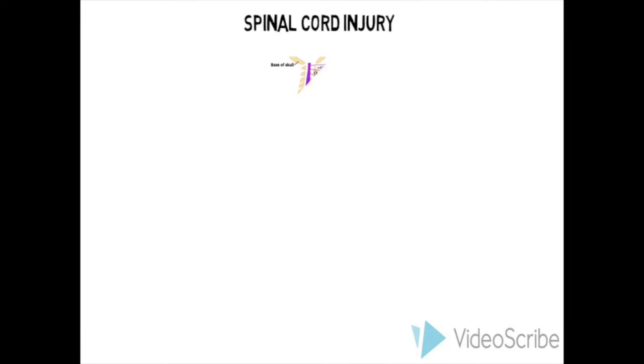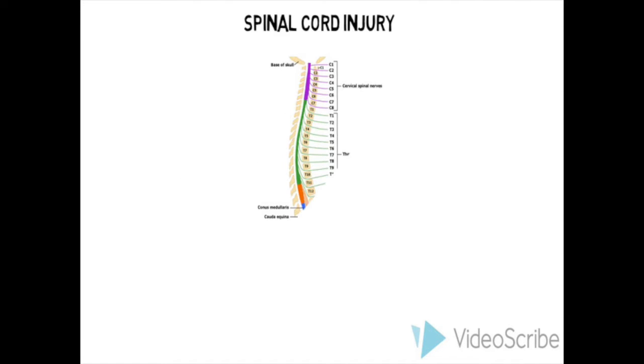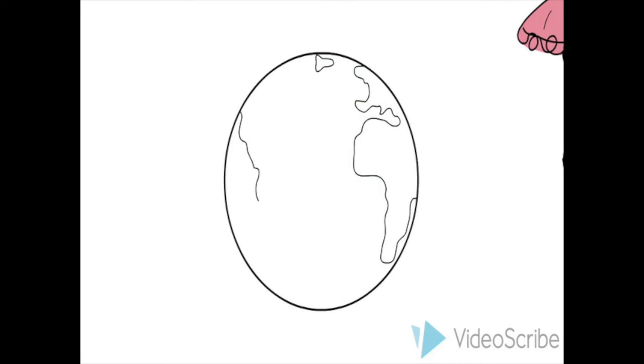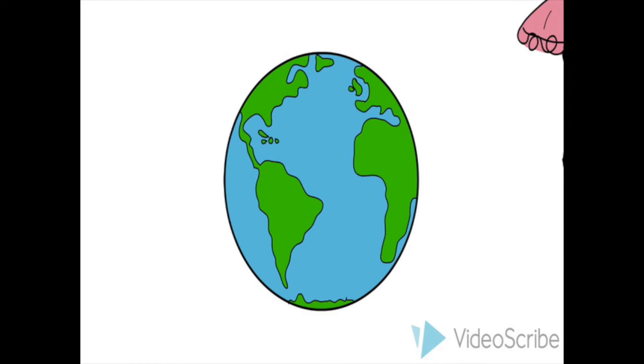Before we discuss the ASIA Impairment Scale, we need to understand what a spinal cord injury is. The spinal cord is found in the vertebral column and consists of 31 segments that connect the brain to the rest of the body, allowing us to feel and move in the world around us. A spinal cord injury is any insult to the spinal cord that disrupts its normal sensory, motor, and autonomic function.